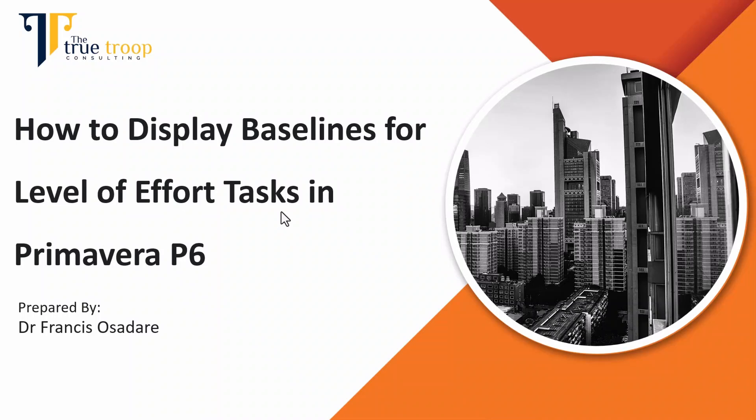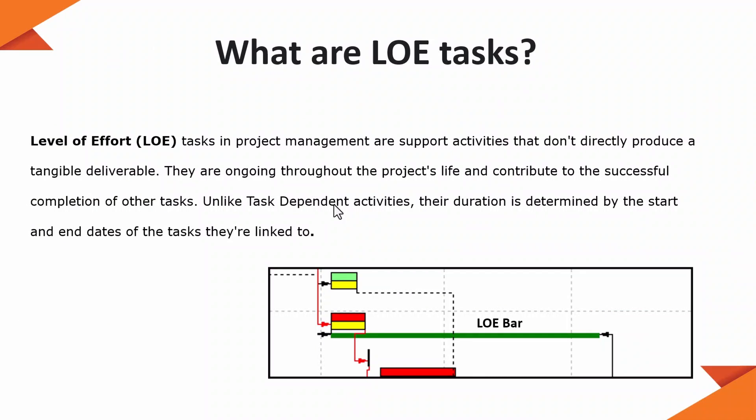Let's see how we can display the baseline for level of effort tasks in Primavera P6. Before we go ahead, let's define what level of effort tasks are. Level of effort tasks include management and support activities that do not directly produce a tangible deliverable. They are not on the critical path — they are always ongoing throughout the project life cycle, or throughout a particular WBS.